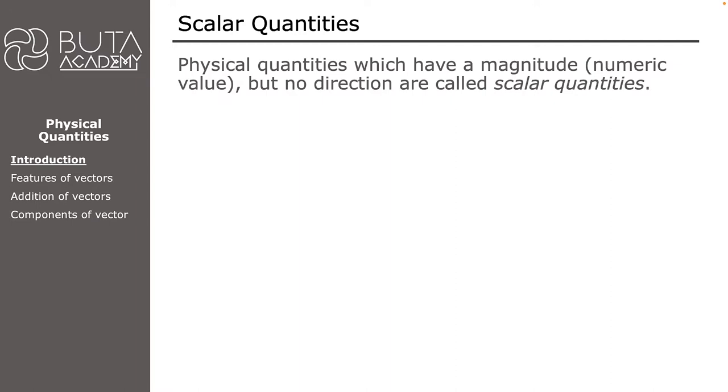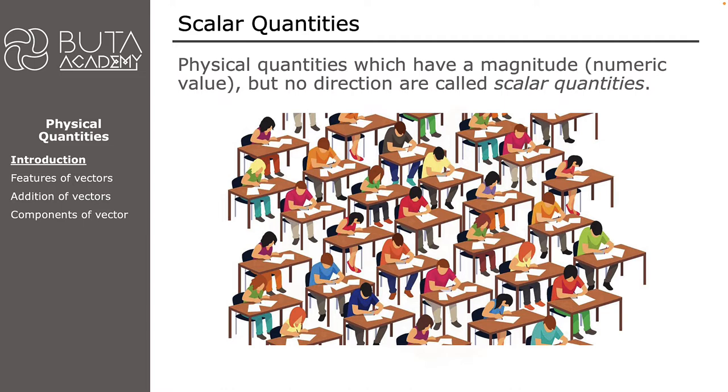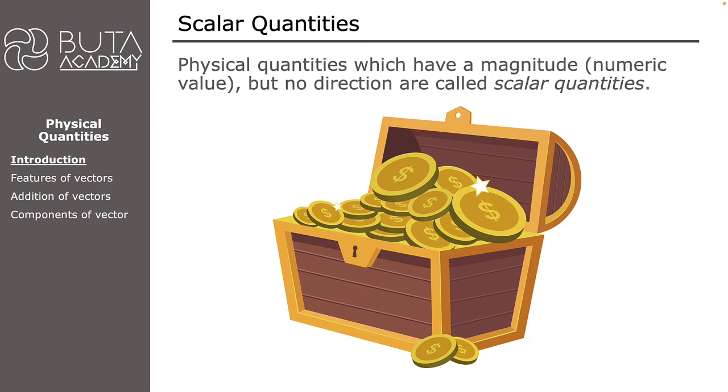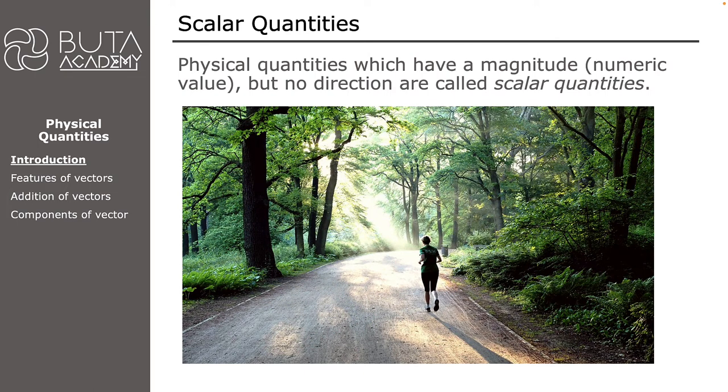For example, the phrase 'there are 20 learners in the class' is self-explanatory. 20 in this phrase is a numeric value or magnitude, and we don't need to specify any direction for these learners. Another example can be amount of money we have. We don't need to specify any direction to say that we have 25 rand to spend in a tuck shop. Of course, if we have buried a treasure and have a map showing its location, direction will be important, but we don't need it in a tuck shop case. Running five kilometers each morning is enough to express that we are trying to have a healthy lifestyle, and we don't need to specify in which direction we are running. As a result, we can say that number of learners in a class, the amount of money we have, or a distance we cover each morning are scalar quantities. We can express them without mentioning any direction.